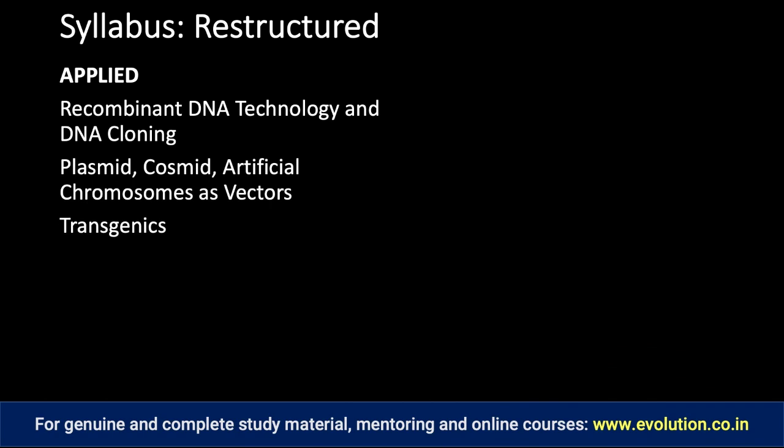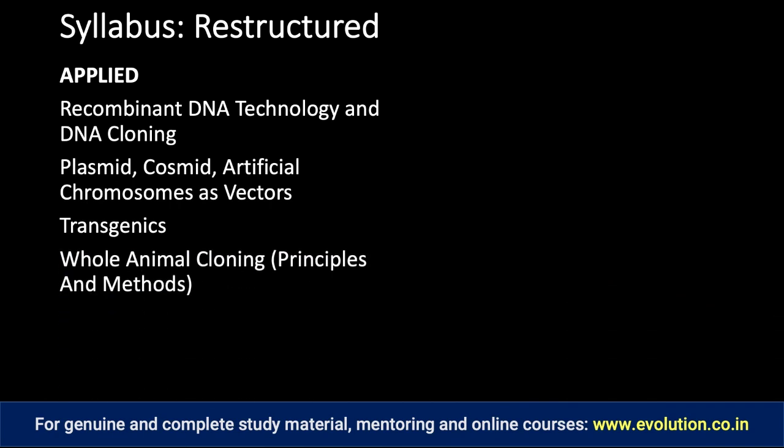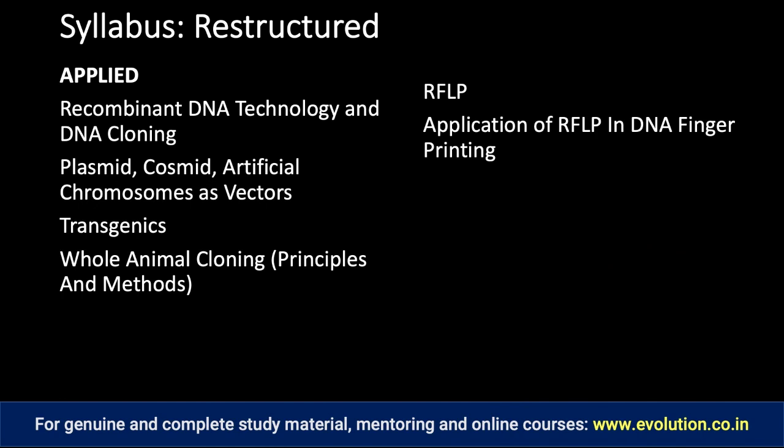Transgenics is the science of producing transgenic organisms. You should cover it in the context of transgenic animals. Recall that transgenics is also a topic mentioned in paper 1 economic zoology, so do it here in a way that you do not need to repeat it in economic zoology. Next topic is whole animal cloning — an exciting topic where you will need to go into biological intricacies. After that, there are molecular techniques: restriction fragment length polymorphism (RFLP), and then the application of RFLP in DNA fingerprinting.